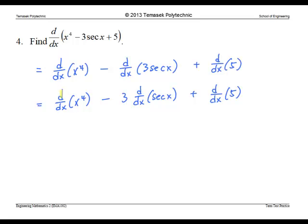Now we check the math table for these formulas. This gives 4x cubed minus 3, the derivative of secant x, which is secant x tangent x, plus 0, the derivative of the constant.